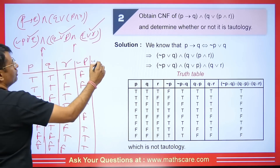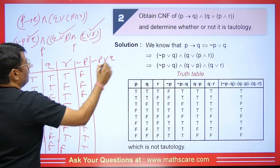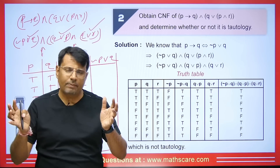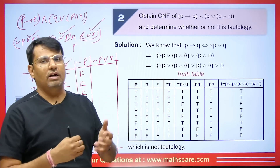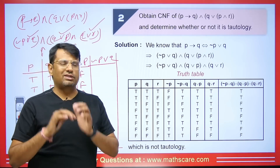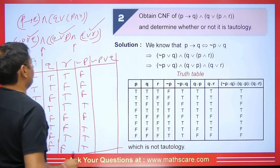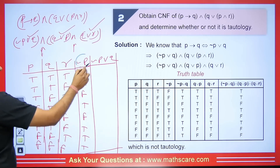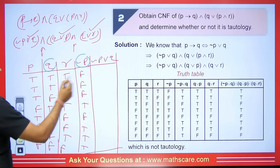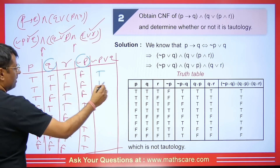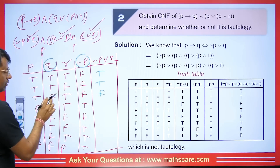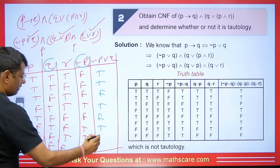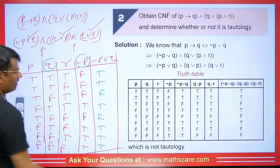Now calculate negation P OR Q. Whenever OR comes, we take T as 1 and F as 0 and add — if the result is greater than or equal to 1 it is True, if 0 it is False. Results: T, T, F, T, T, T, T, T. Now calculate Q OR P — this gives: T, T, T, T, F, F, T, F — wait, applying the values: T, T, T, T, F, F, T, F.